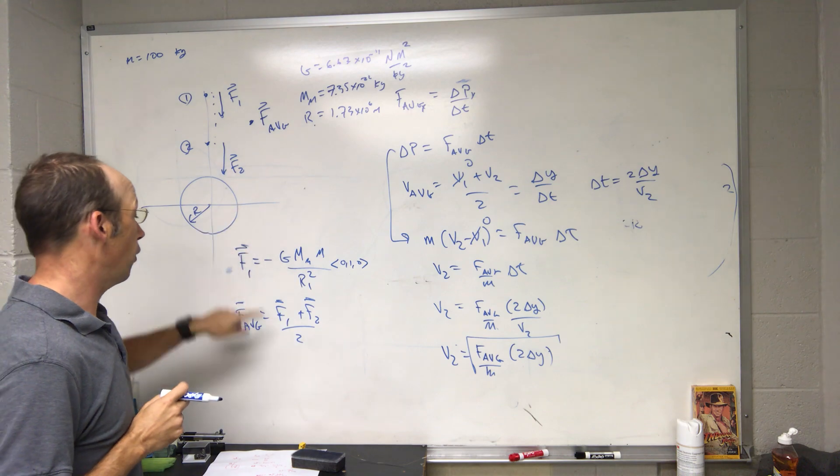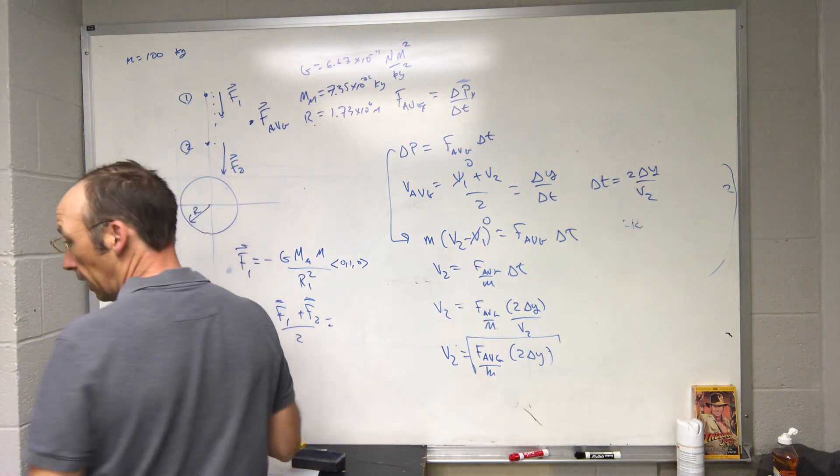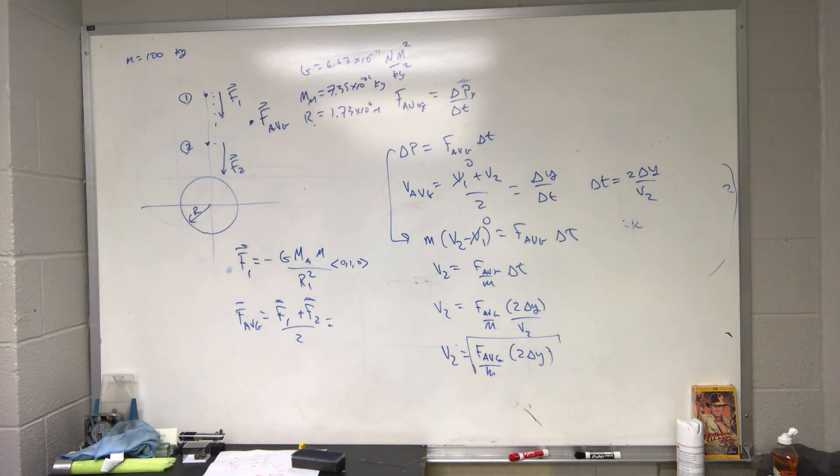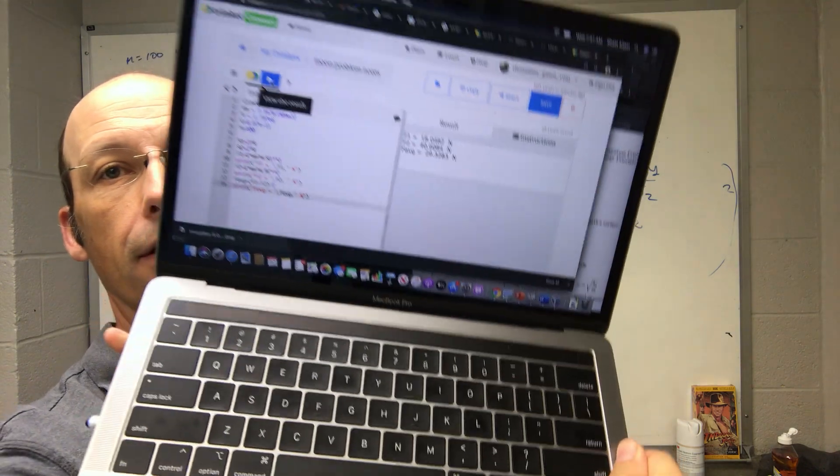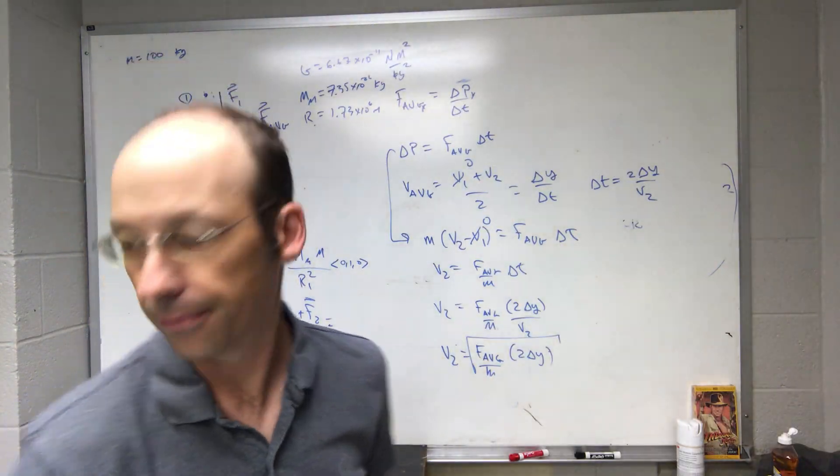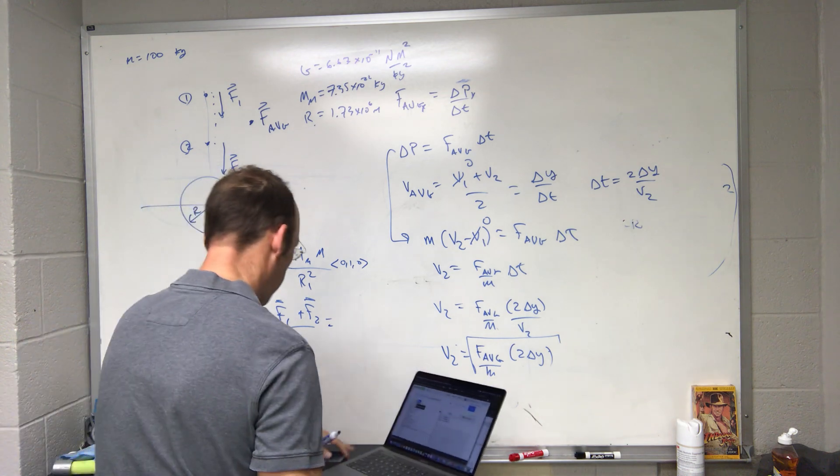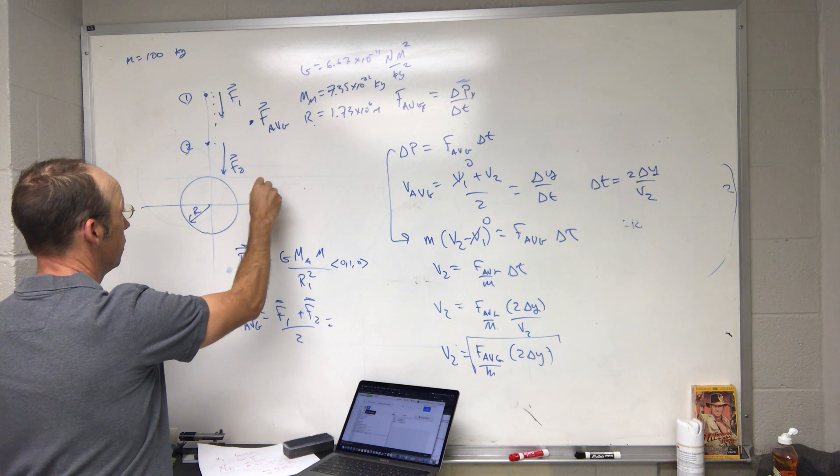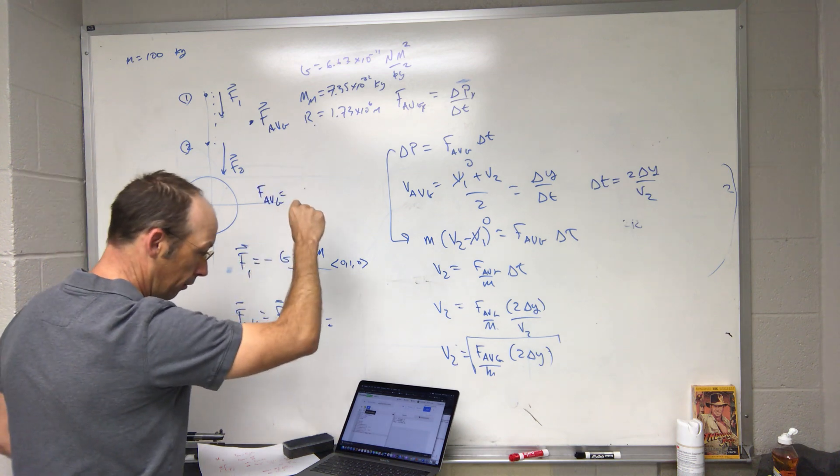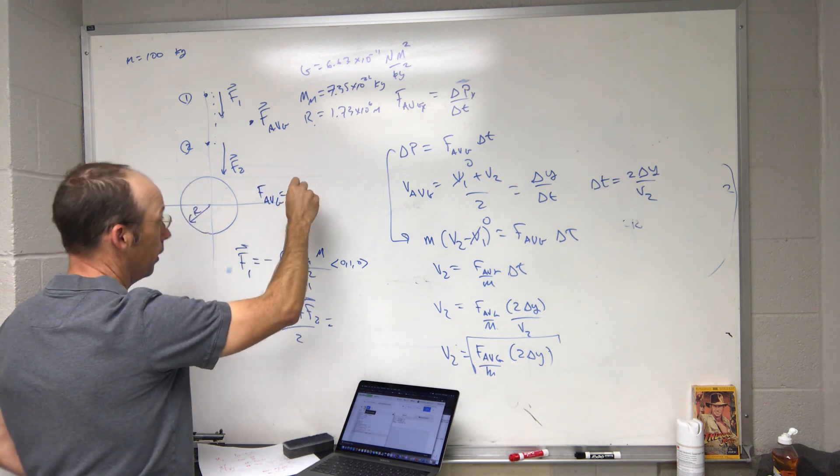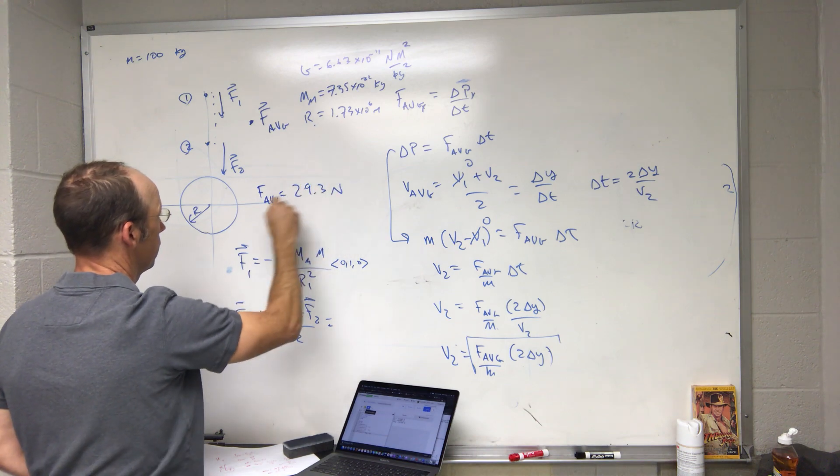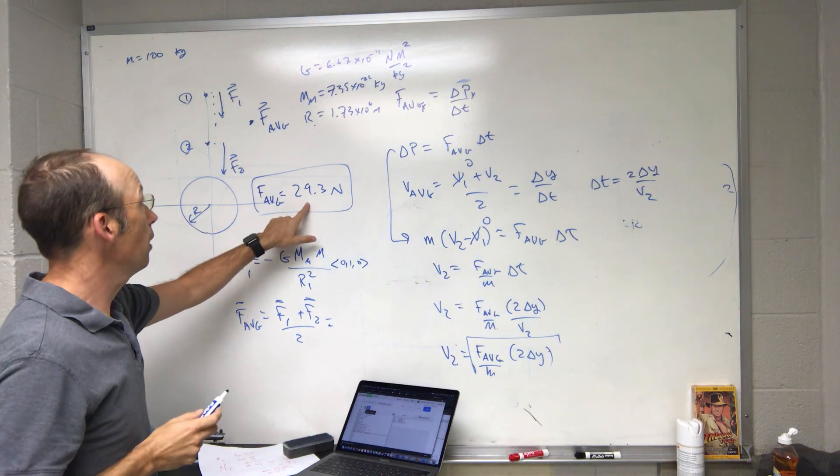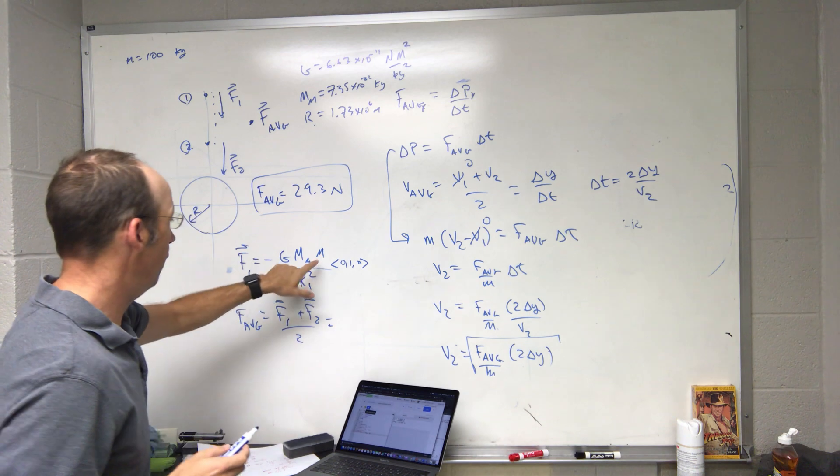So plug in G, m, m, r1 squared and I get the magnitude there. Do it again for r2 and then find the average. I redid this part on my calculator. I did prepare a little bit. So I get F average magnitude is 29.3.